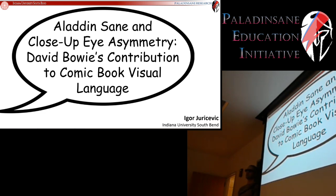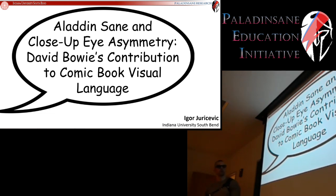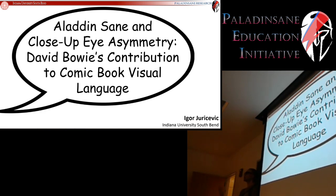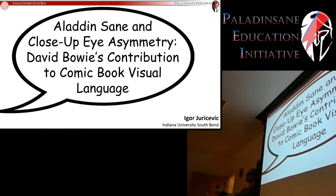You will present that article to class. The goal of the presentation is for you to sit up here and, much like the article 'Aladdin Sane and Close-Up Eye Asymmetry: David Bowie's Contribution to Comic Book Visual Language,' give a summary so that in 20 minutes your audience can understand what that article was about, what was done, and what was the basic point. It's not a synthesis of your project yet — it's just a single article.